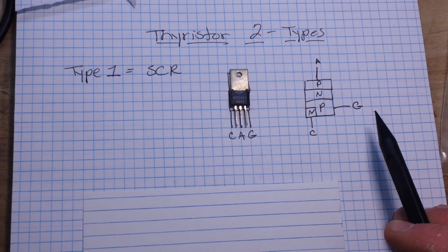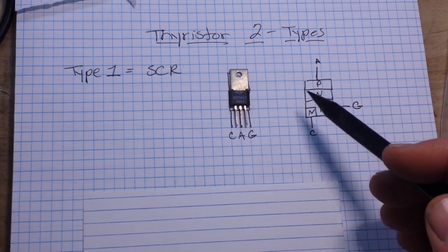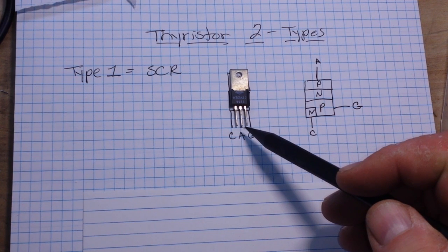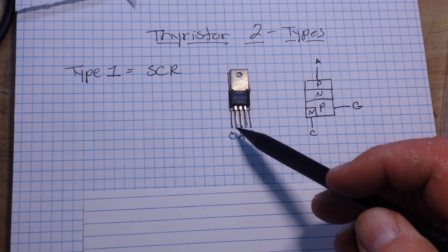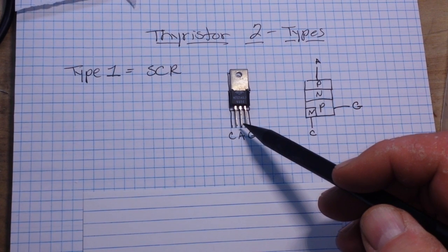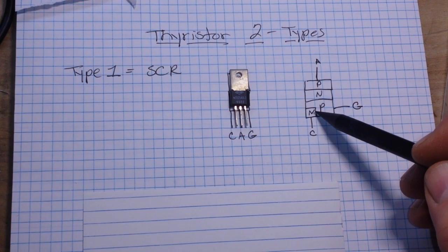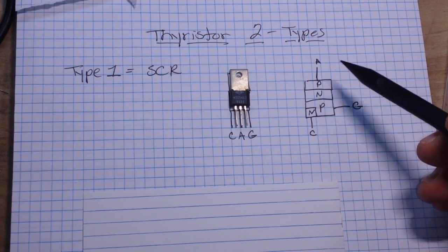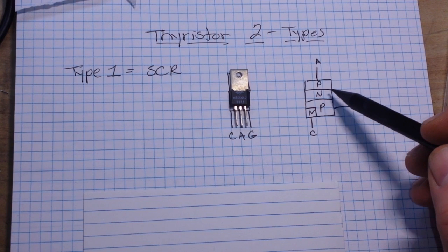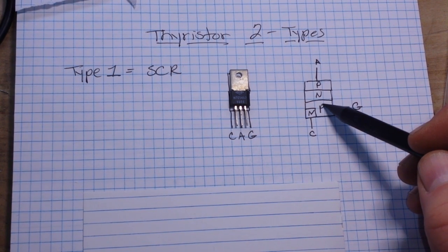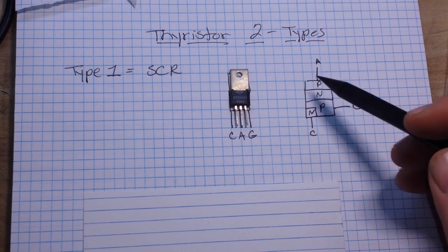Now if the anode, that's our A here, of the SCR is made more positive than the cathode, the C, the two outermost PN junctions are forward biased, that's there and there. The middle PN junction, that's there, however is reverse biased, and current can't flow.